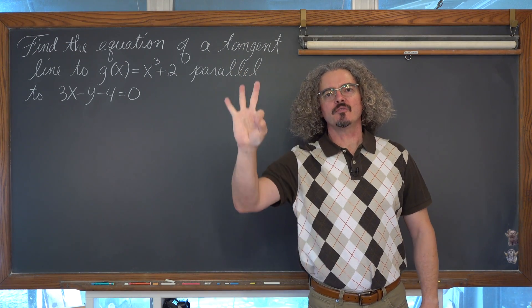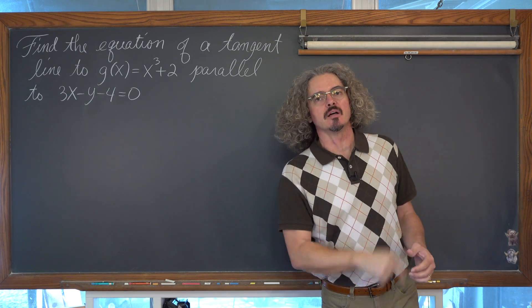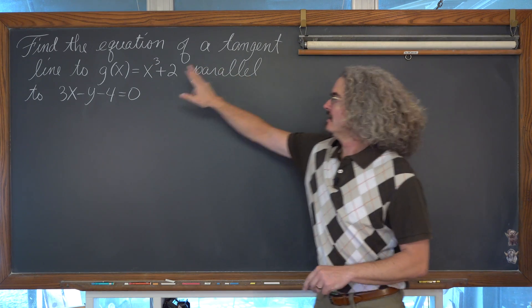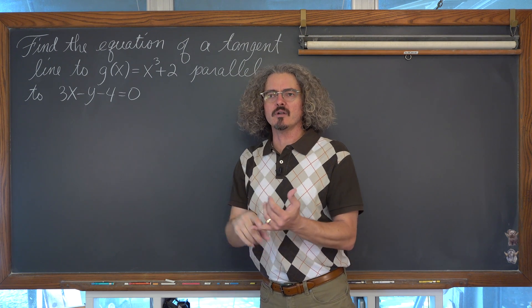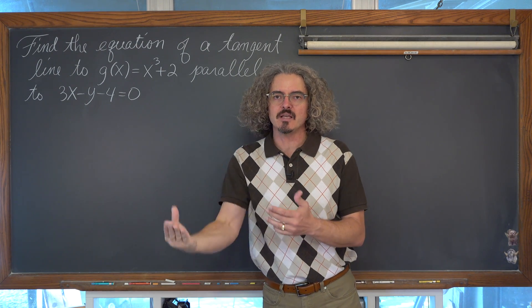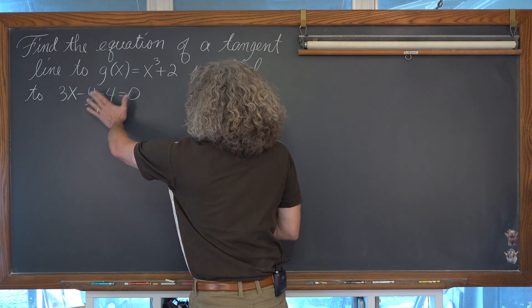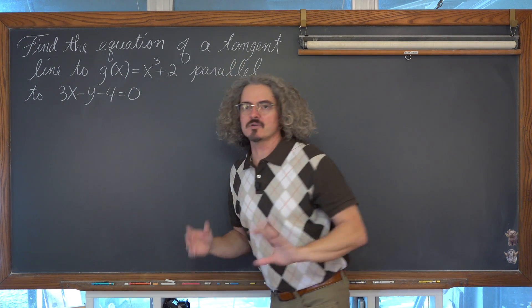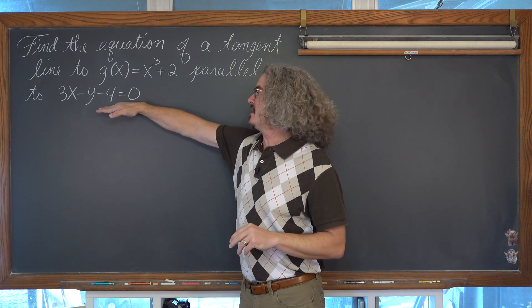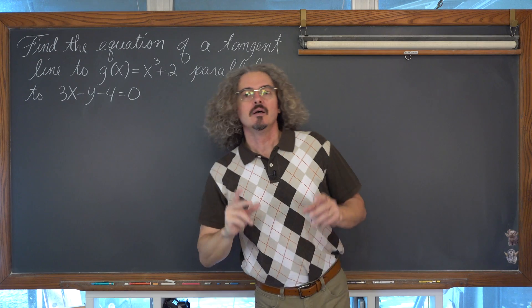Welcome to part two of three parts where we're discussing the fundamentals of finding the equation of tangent lines. This time we're finding the equation of a tangent line that is parallel to a given line. We are not specifically told to find a tangent line at a point of tangency. We are given a line that is somewhere out there on the Cartesian plane, and we want to find maybe more than one tangent line that is parallel to the given one for the function g(x) = x³ + 2.